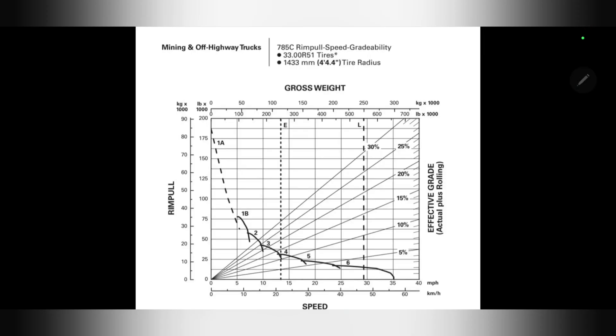What are RIMPLE curves? RIMPLE curves are fleet specific. They are used to calculate the maximum speed and gear for a specific piece of equipment on a specific portion of road travelling uphill.